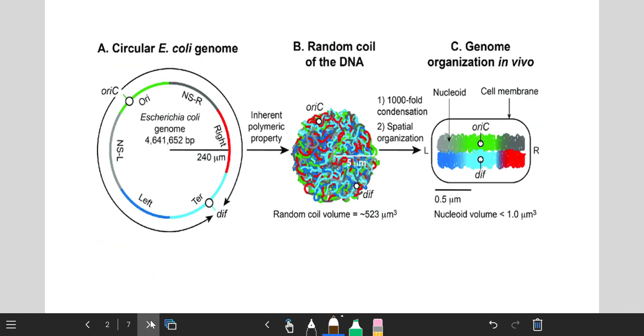This is the picture of circular, single E. coli genome. The second picture represents the random supercoiling structure of the DNA. And after incorporation into the cell, this image represents how the genome looks like.